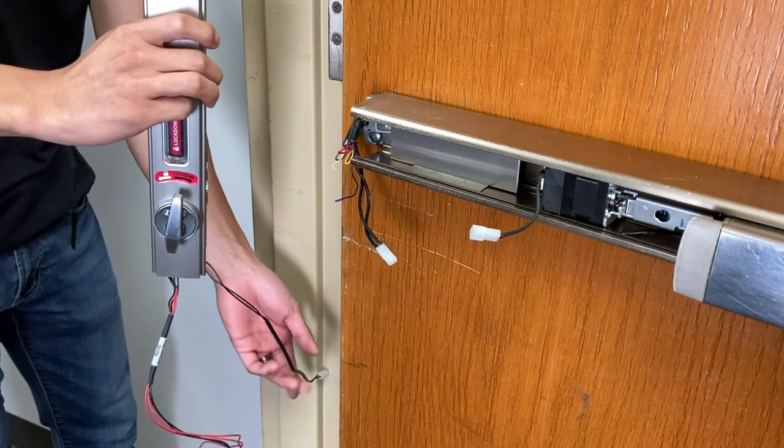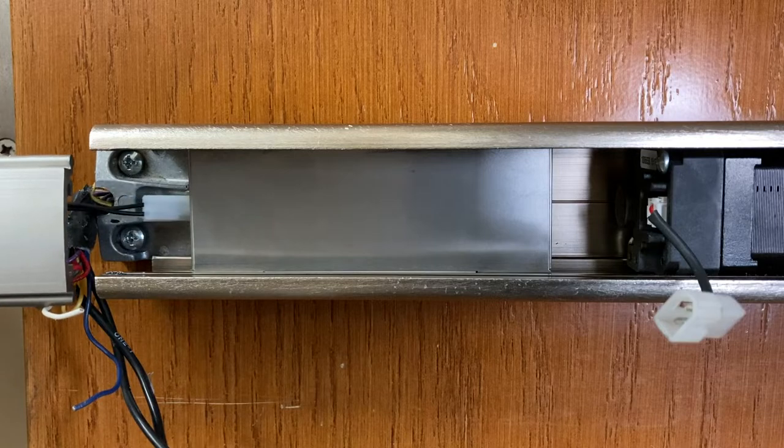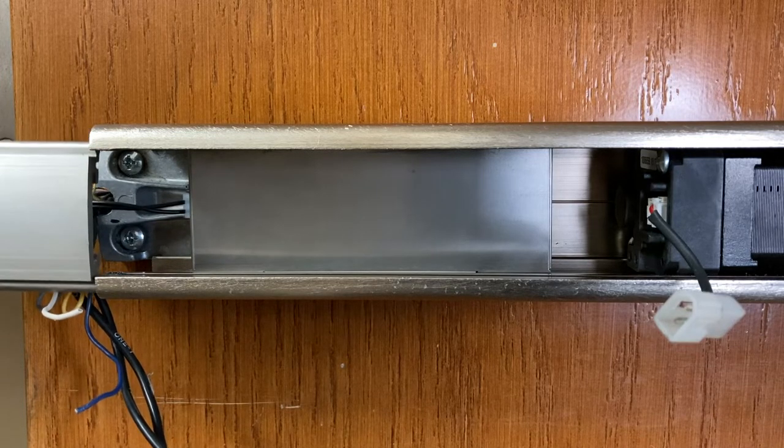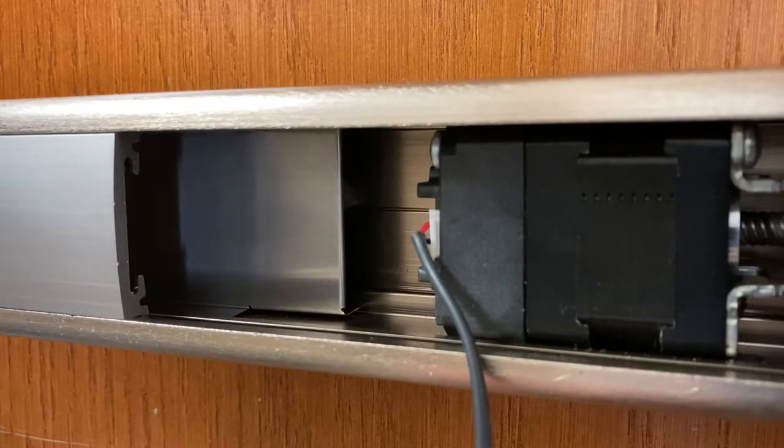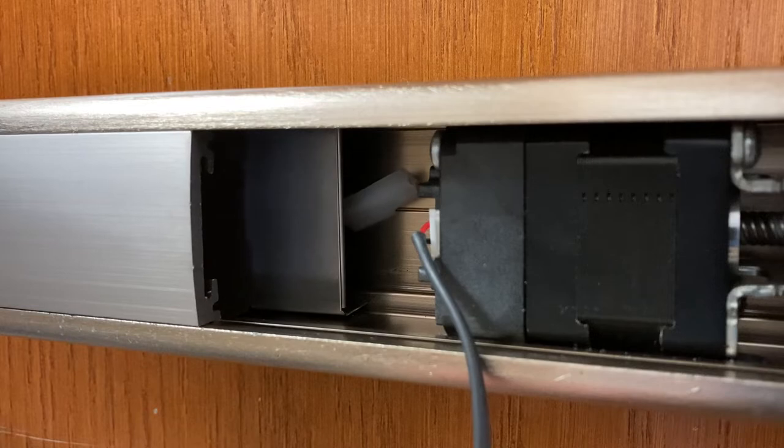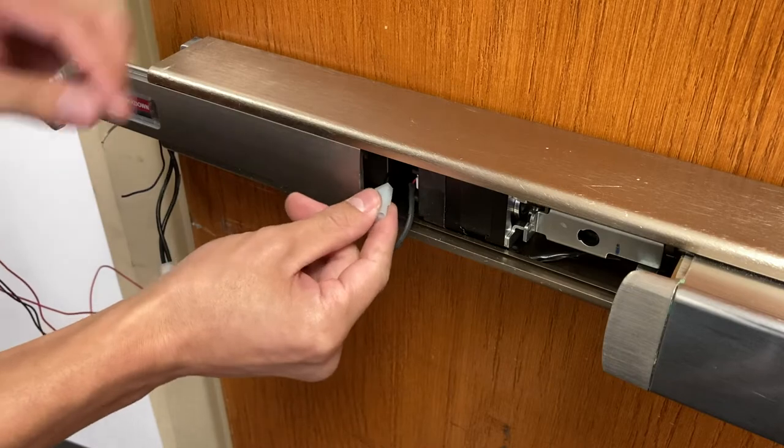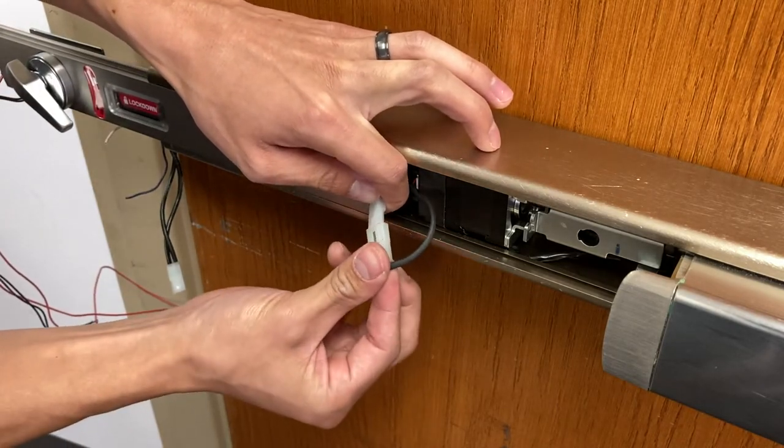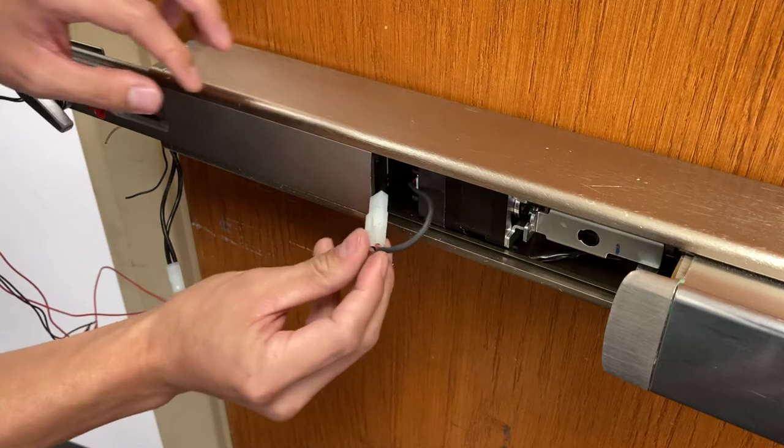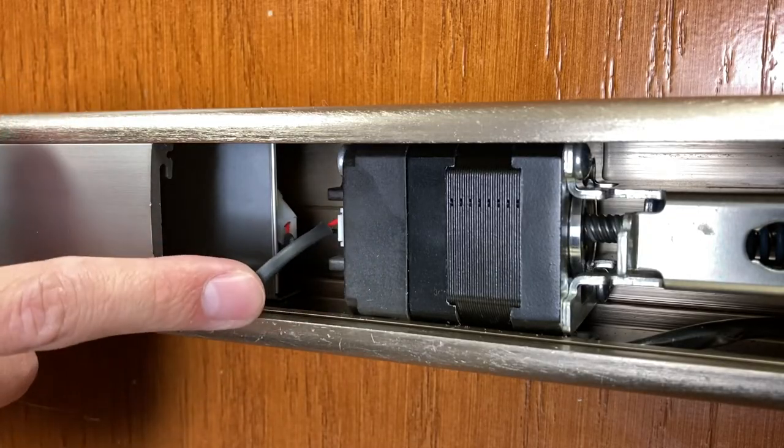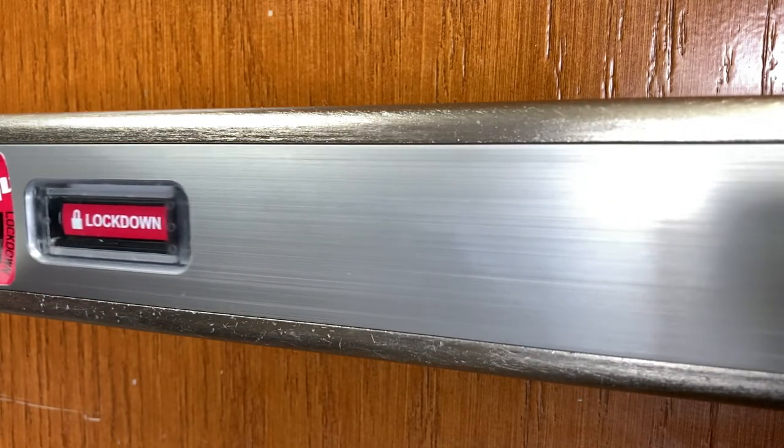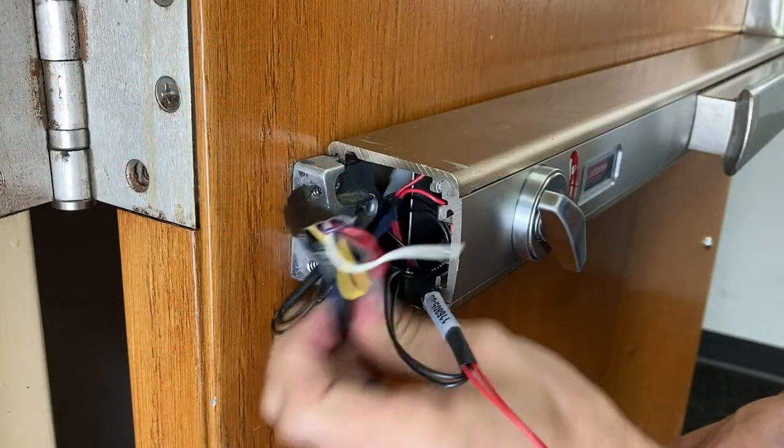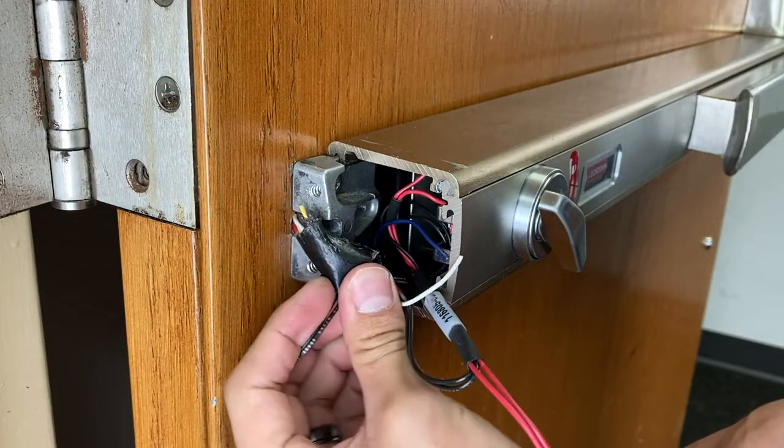Slide the ESL assembly part way into the mechanism case. Feed the two-pin ESL cable behind the wire management bracket as shown. If the wire is not fed behind the bracket, it may interfere with ESL operation. Connect the ESL cable to the QEL cable and tuck the cable and connectors behind the bracket. Slide the ESL assembly into the mechanism case completely. Tuck any extra cable behind the wire management bracket.